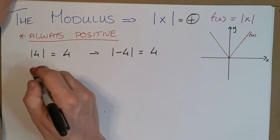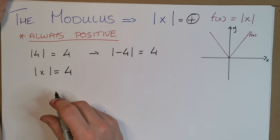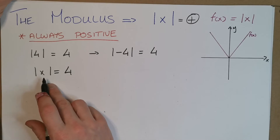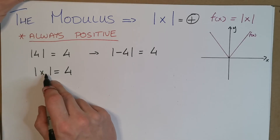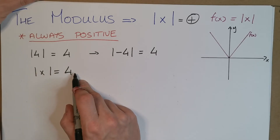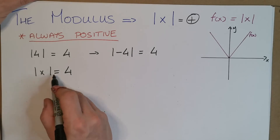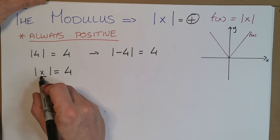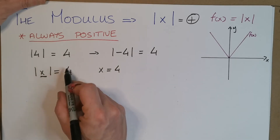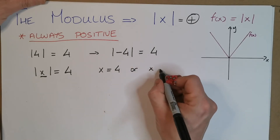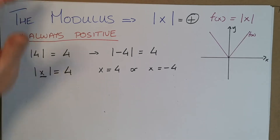If I told you the modulus of X was equal to 4, people might get narrow-minded and say X has to be positive. But inside the modulus brackets we can have negative stuff — it just ends up positive when we operate on it. So if the modulus of X is 4, there are actually two answers: X could be 4, because the modulus of 4 is 4, but X could also be minus 4, because the modulus of minus 4 is also 4.